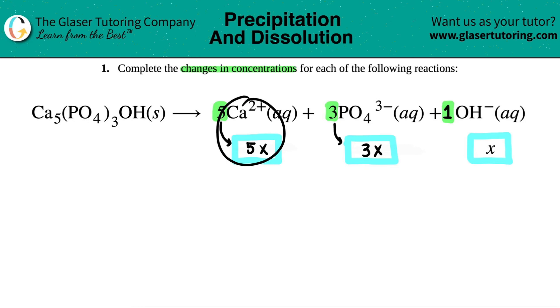So the calcium 2+ would change the most because it's five times the variable. It has the greatest coefficient. The hydroxide would change the least because it's just a one X, or just an X.